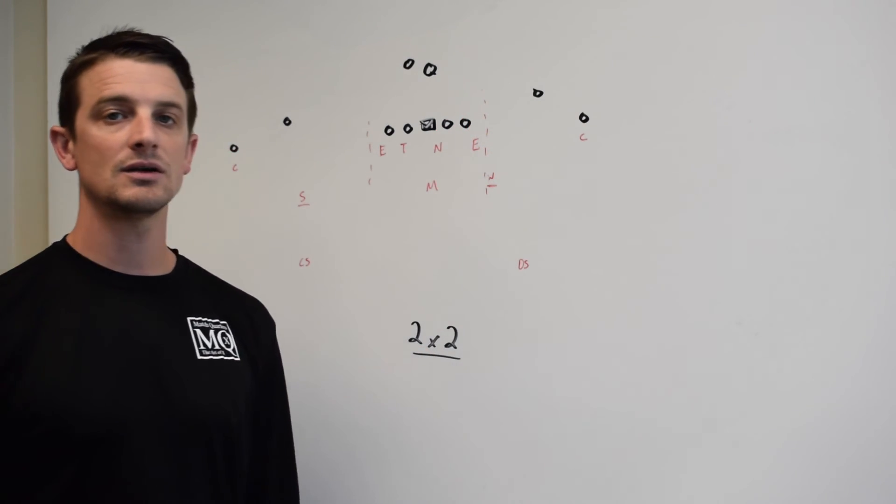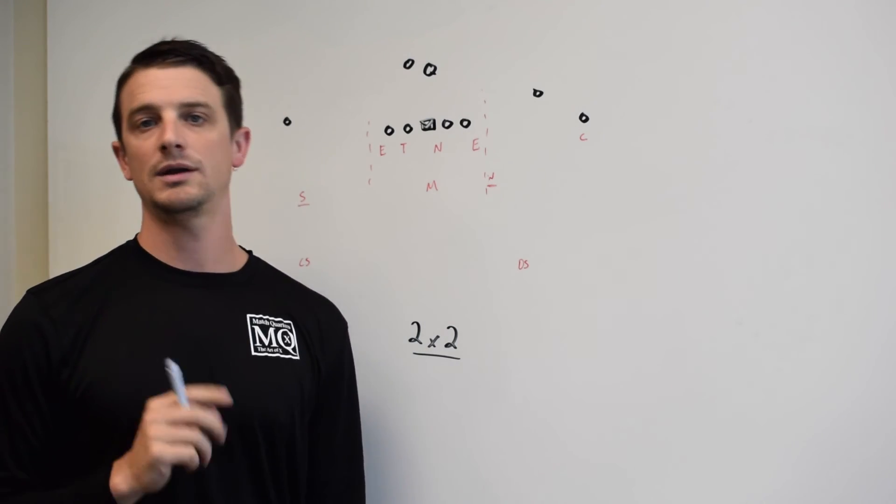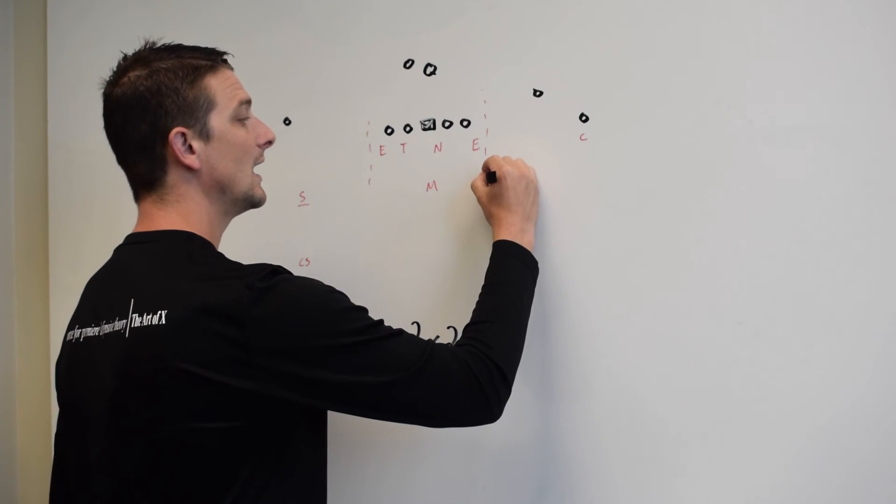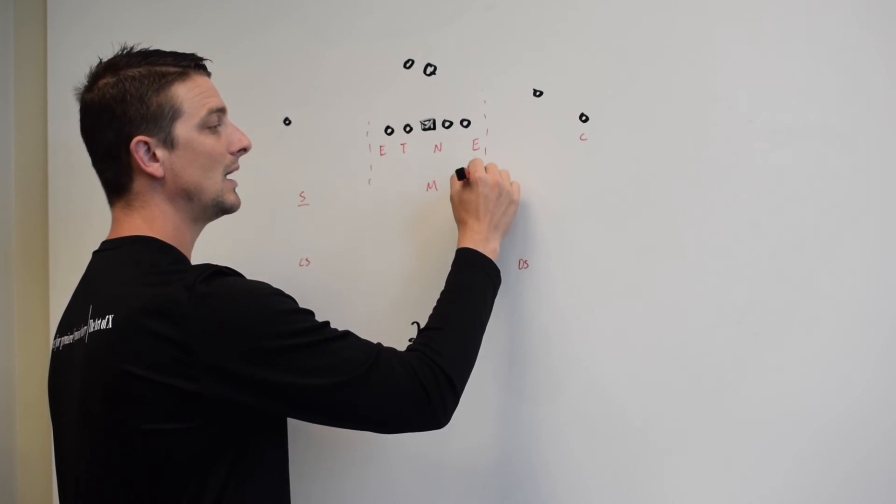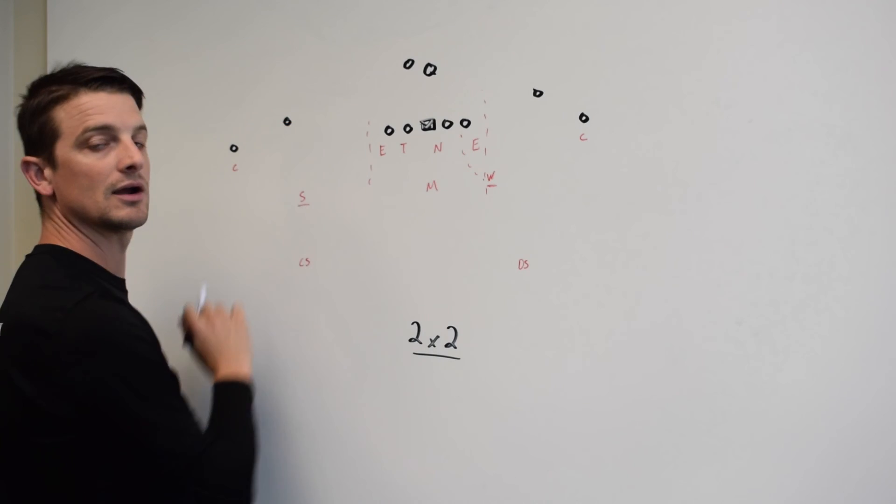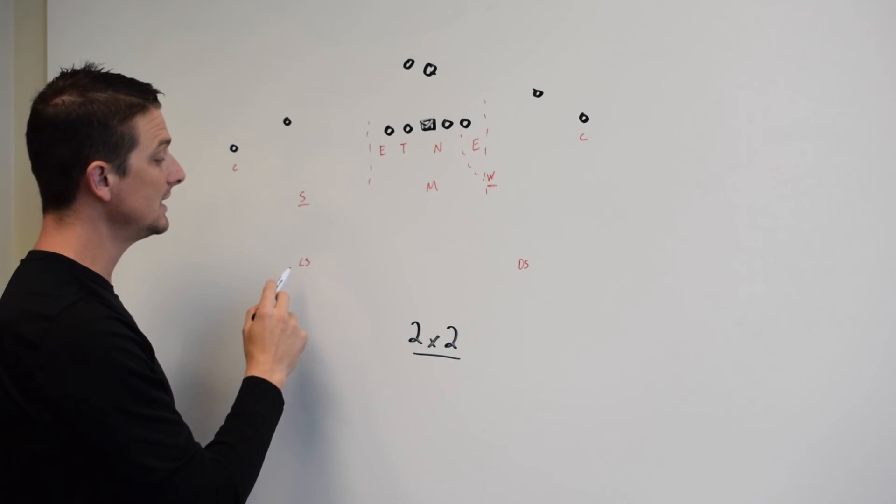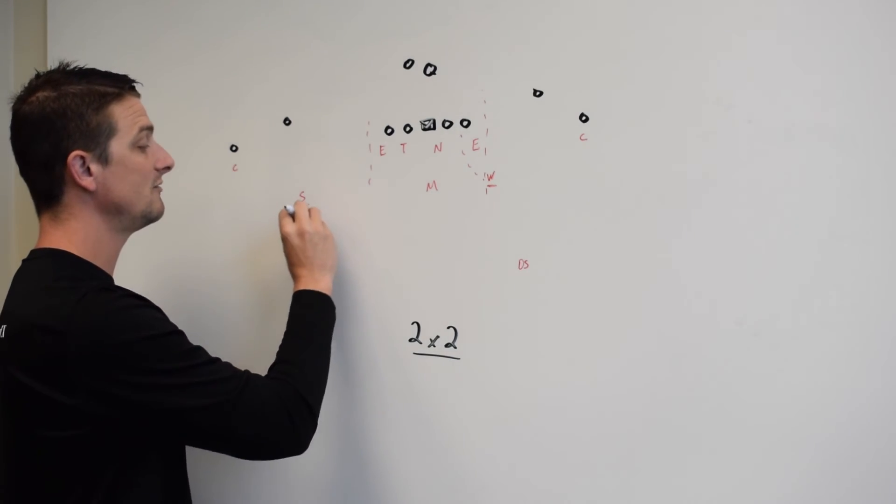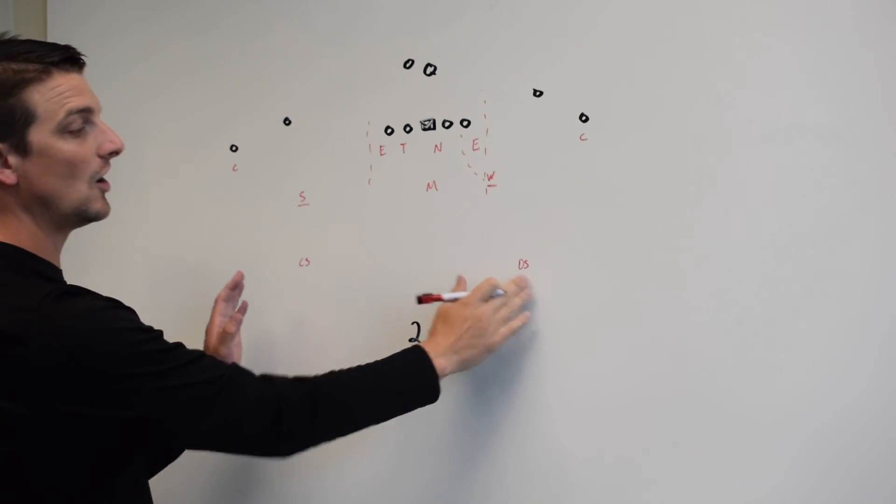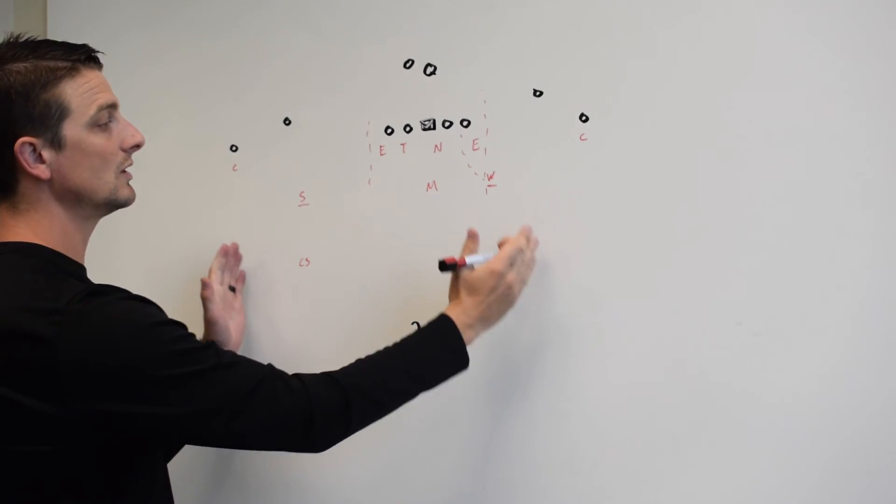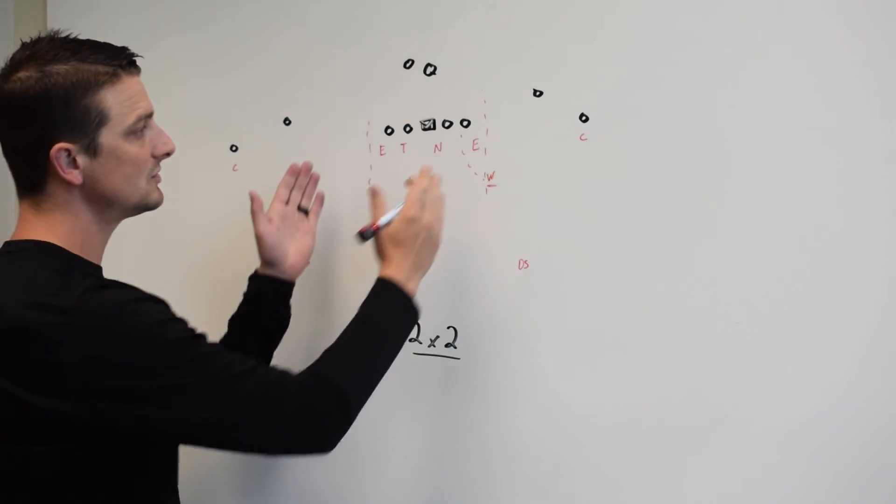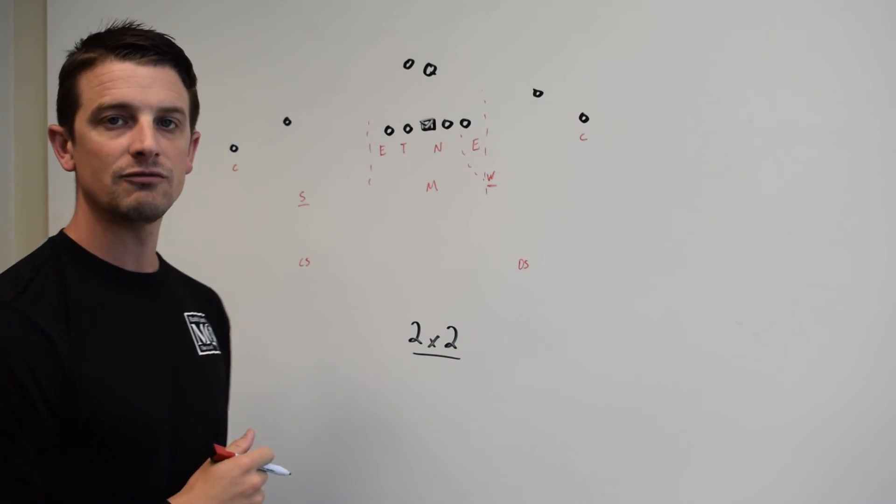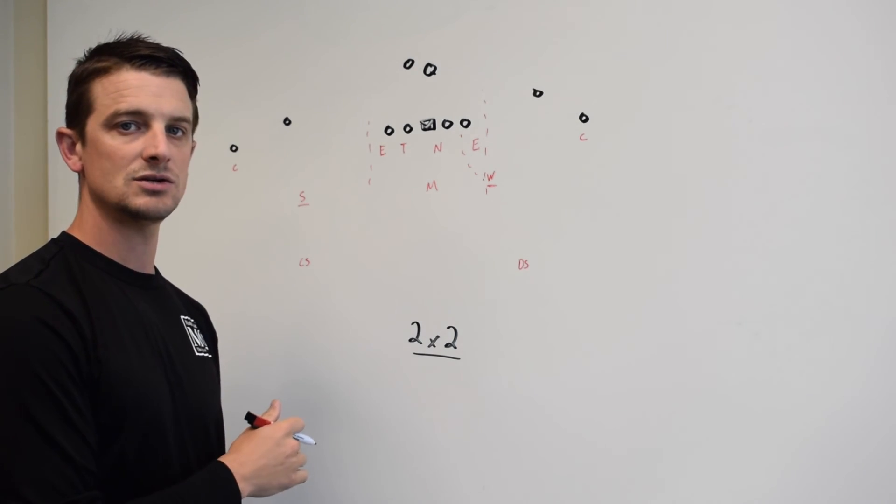Now, defensive coordinators know that not only is the Will linebacker in the box fit, but I've also got a Sam linebacker who's going to be a force player back in, and I have a safety that is going to fill and is going to relate off my Sam linebacker. I also have a backside safety, so I really have nine in the box. But in terms of what the offensive coordinator is going to see, this is going to be a 4-1 box.